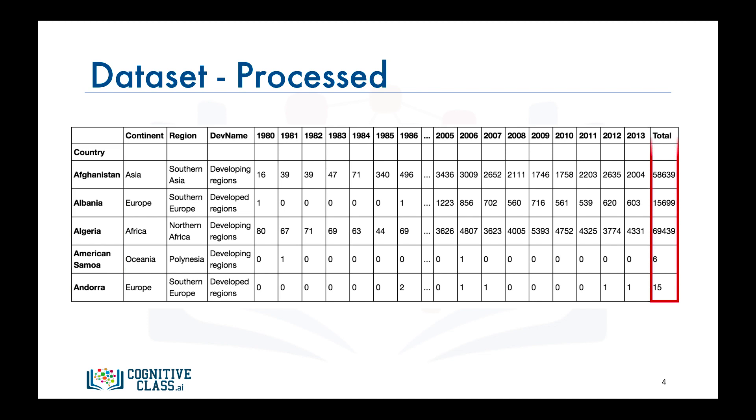Also let's add an extra column which represents the cumulative sum of annual immigration from each country from 1980 to 2013. So for Afghanistan, for example, it is 58,639 total. And for Albania, it is 15,699 and so on. And let's name our dataframe df_canada.